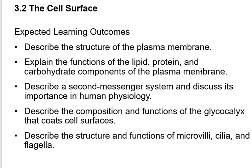As we go along we're going to learn about second messenger systems and things that stick out of a cell like microvilli, cilia, and flagella. Flagella you're familiar with from sperm — that long whipping tail. Cilia are like flagella but much shorter, and will be important in the respiratory system. Microvilli are found in the intestines and allow you to absorb food by increasing surface area.